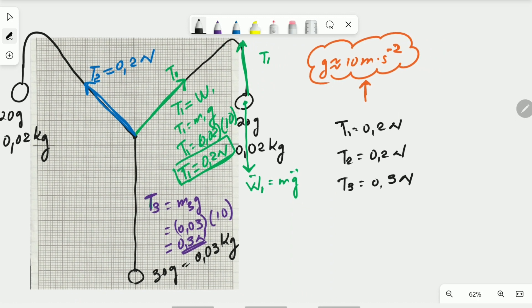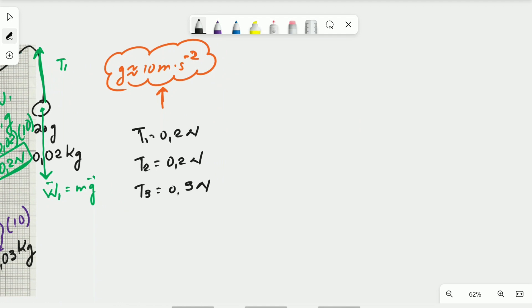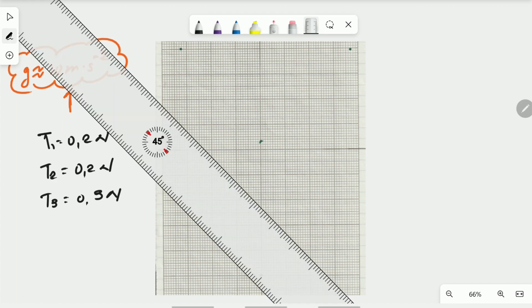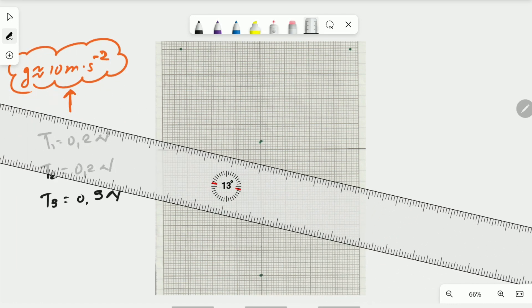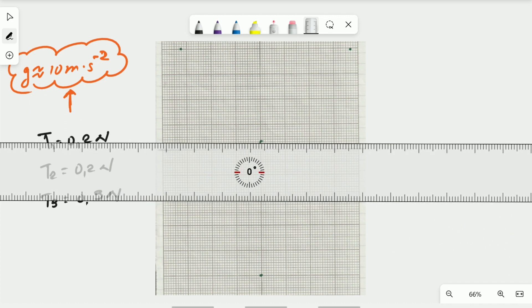Now what we don't have and we need to get is the direction of those specific vectors there. To do that we are going to redraw it again a little bit more clear. Now what we are going to do is to get the direction. To get the direction you do need to use a protractor and a ruler.